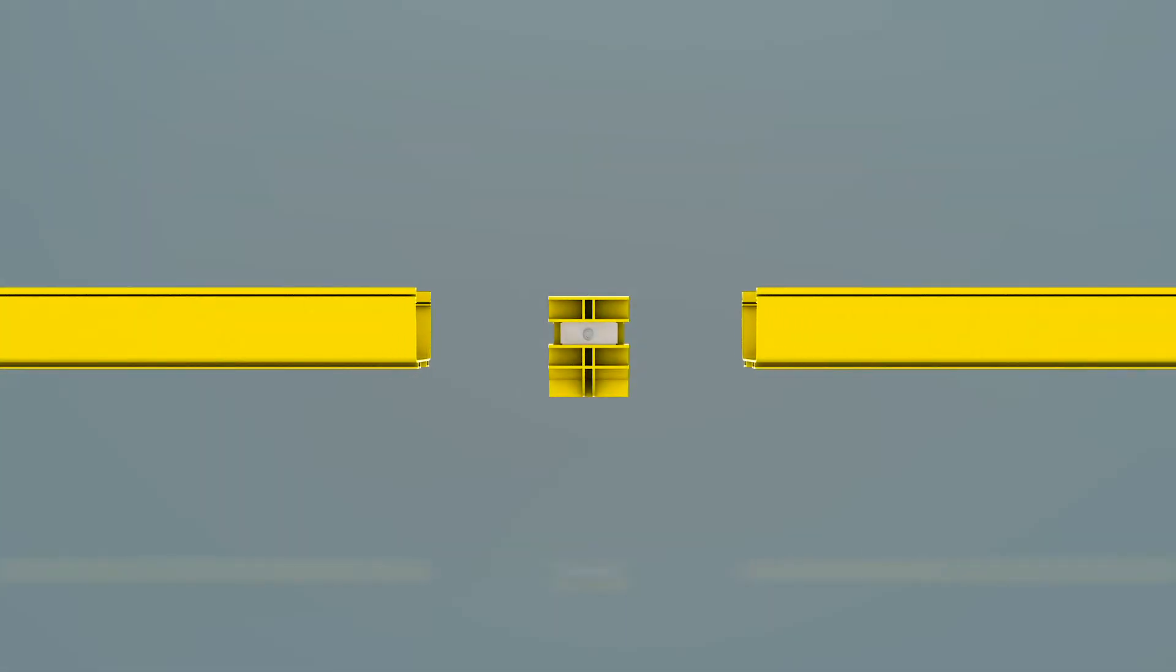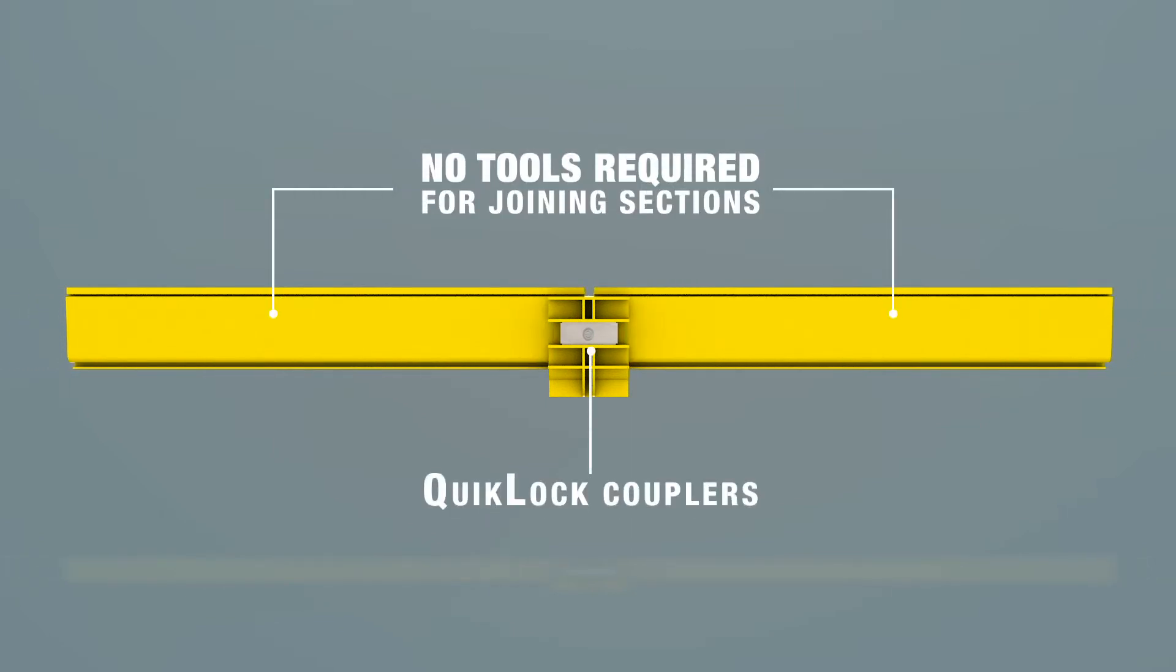Various components are offered to improve the speed of installation, such as quick lock couplers which require no tools or preparation for joining two sections of pathway fittings.